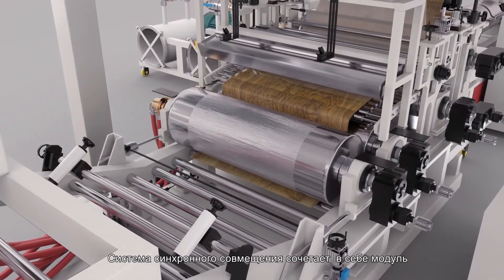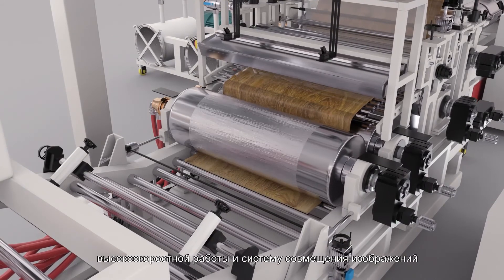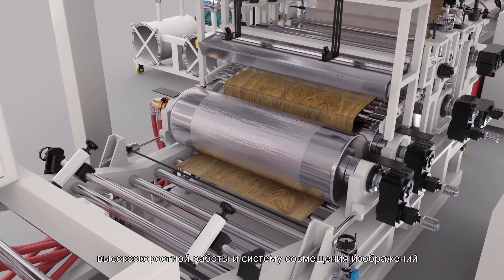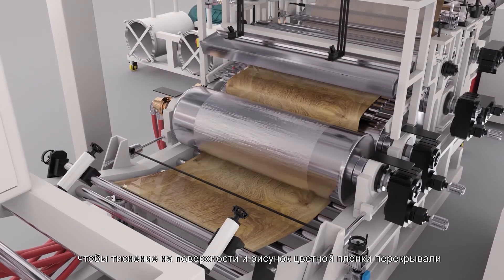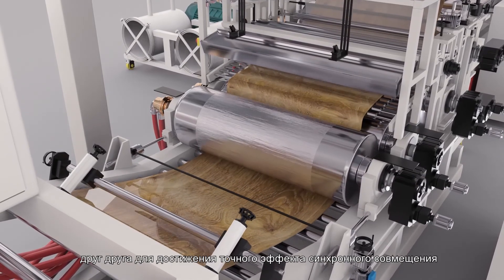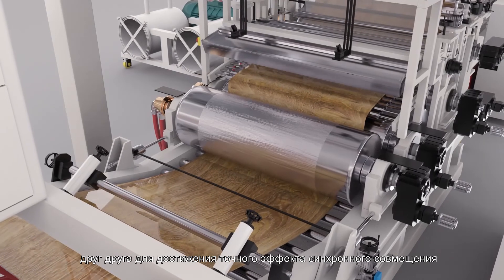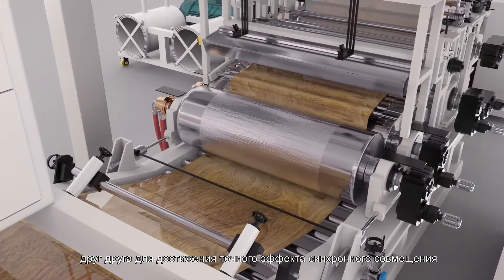Synchronous registration system combines high-speed operation module with a magic alignment system to make the surface embossing coincide with the color film pattern, so as to achieve the precise alignment effect of synchronous registration.